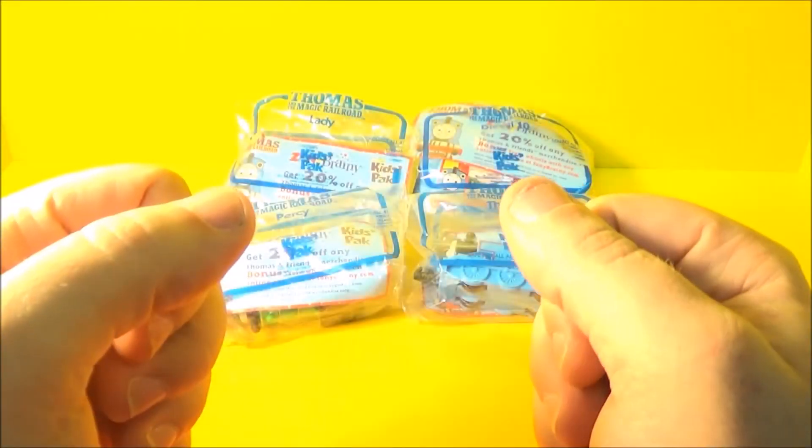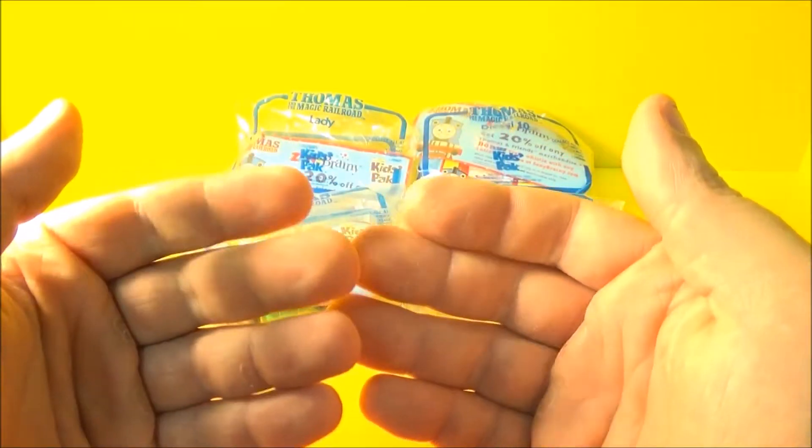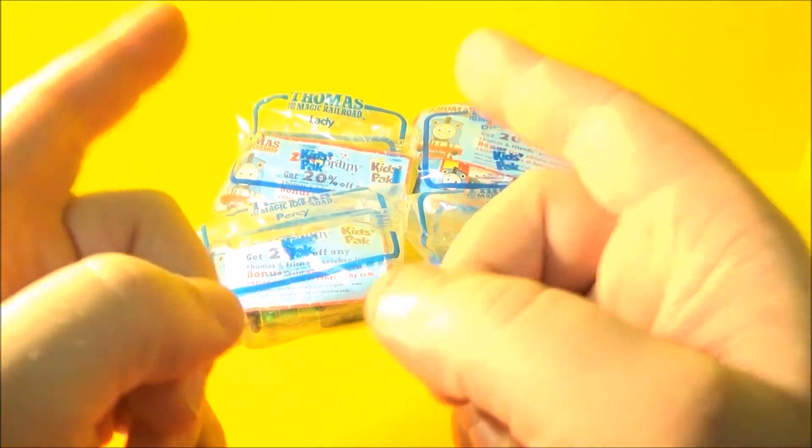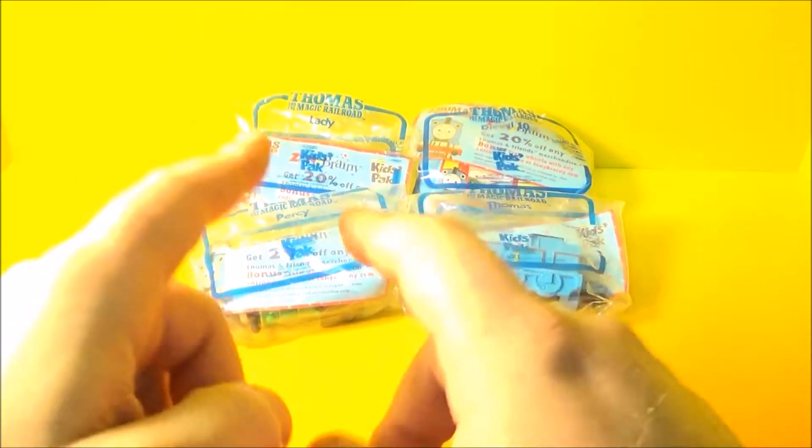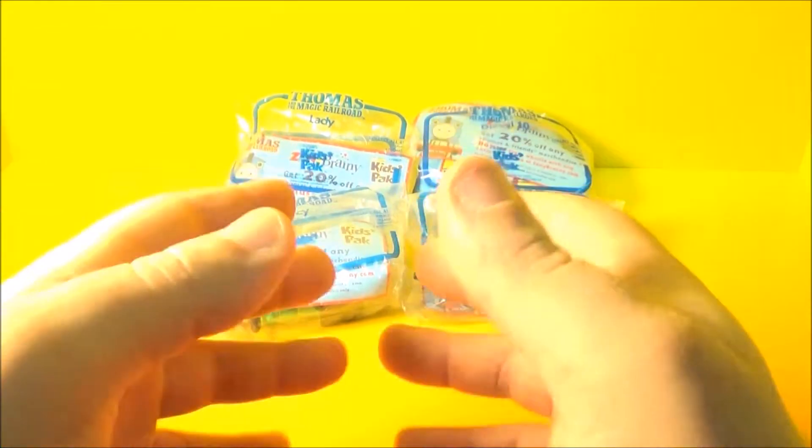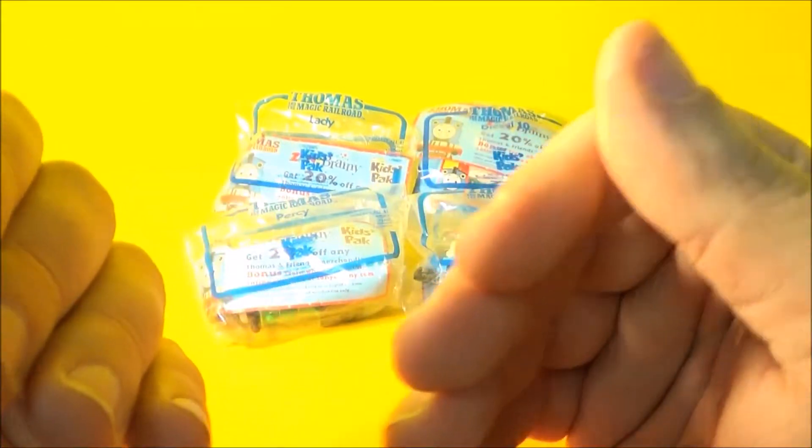Hey there everybody, welcome back to another one of Jesse's Toy Reviews. Today we have Subway Kids Pack Thomas and the Magic Railroad set of four. This set came out back in 2000, so why don't we get them out of the bags and have some fun.